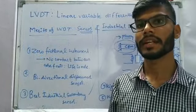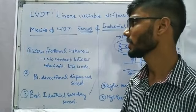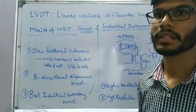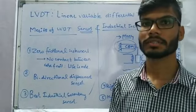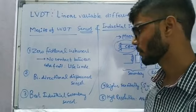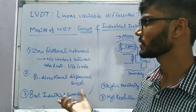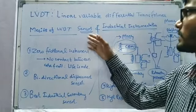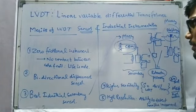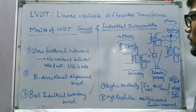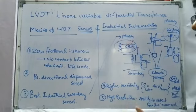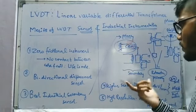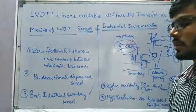Understanding the working principle and construction of LVDT, we can discuss its merits. First, it is a zero-friction instrument because there is no contact between the core and the coil, so its lifetime is longer. Second, it is a bi-directional displacement sensor because it can detect both negative and positive displacement with respect to the null point. It is also used as an industrial secondary sensor. For example, the core of LVDT can be connected to a cantilever beam — if force is applied and the beam deflects downward, the core displaces accordingly, and the secondary sensor gives output proportional to the applied force.